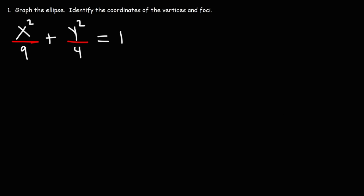Now let's work on some practice problems — graph the ellipse and identify the coordinates of the vertices and foci. To find the foci you need to calculate c. The equation is c squared equals a squared minus b squared — not a squared plus b squared as in the Pythagorean theorem. For hyperbolas it's c squared equals a squared plus b squared, but for ellipses c squared equals a squared minus b squared.